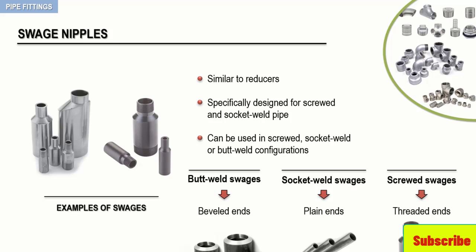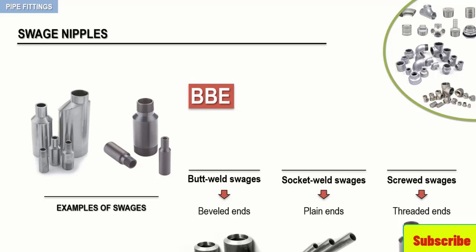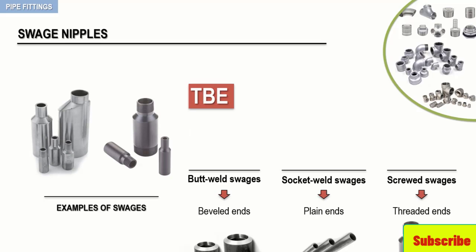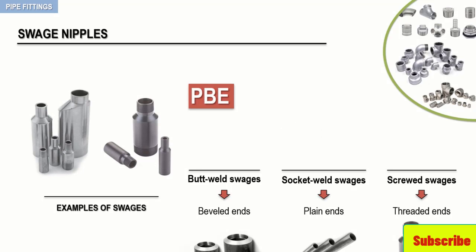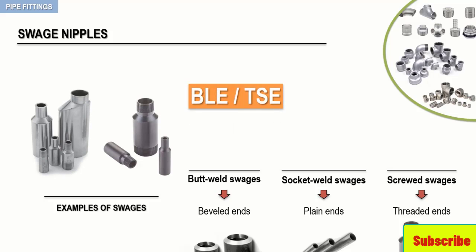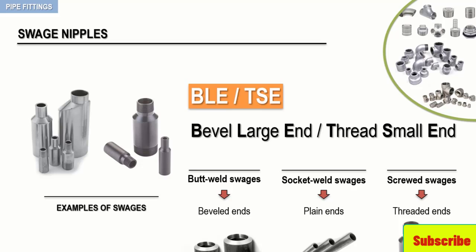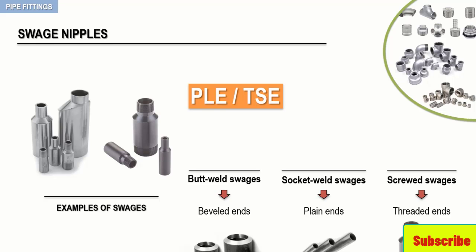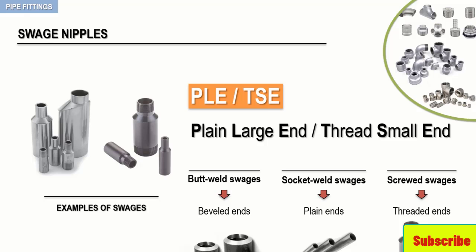Swages are also manufactured with different preparations on their opposing ends. When specifying a swage, you must use one of the following abbreviations: BBE for Bevel Both Ends, TBE for Thread Both Ends, PBE for Plain Both Ends, BLE TSE for Bevel Large Ends Thread Small Ends, and finally PLE TSE for Plain Large Ends Thread Small Ends, as in this example.